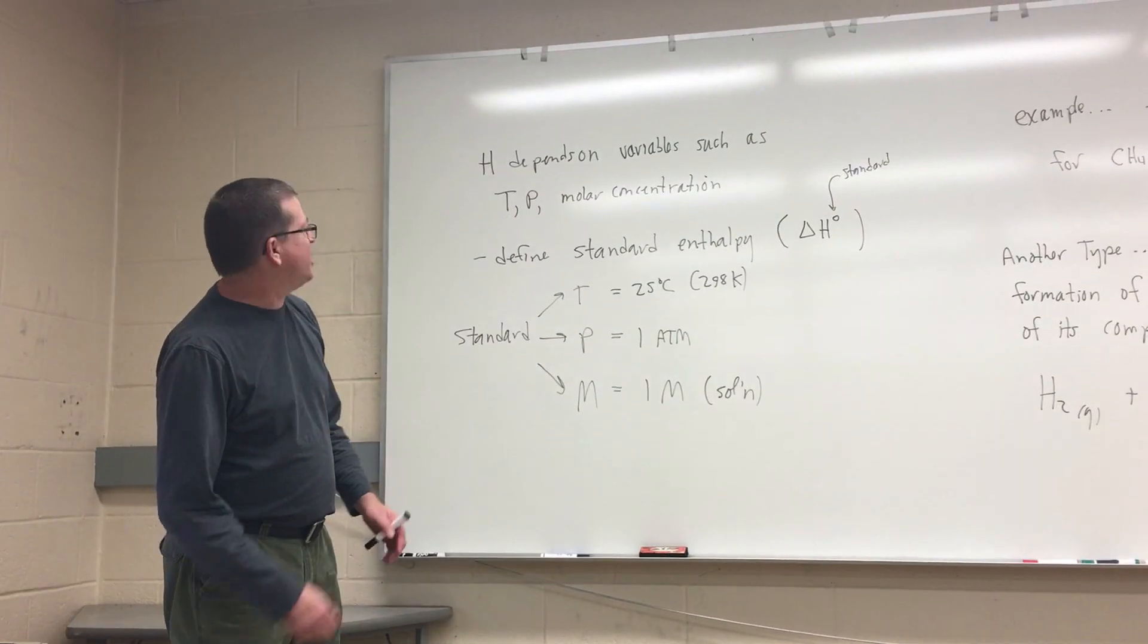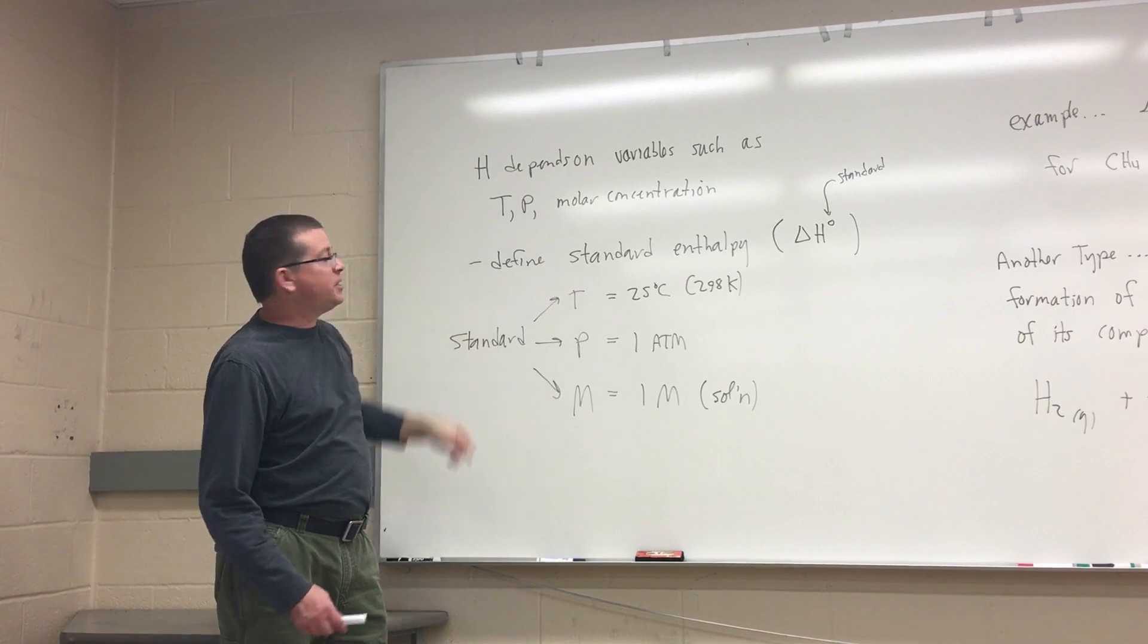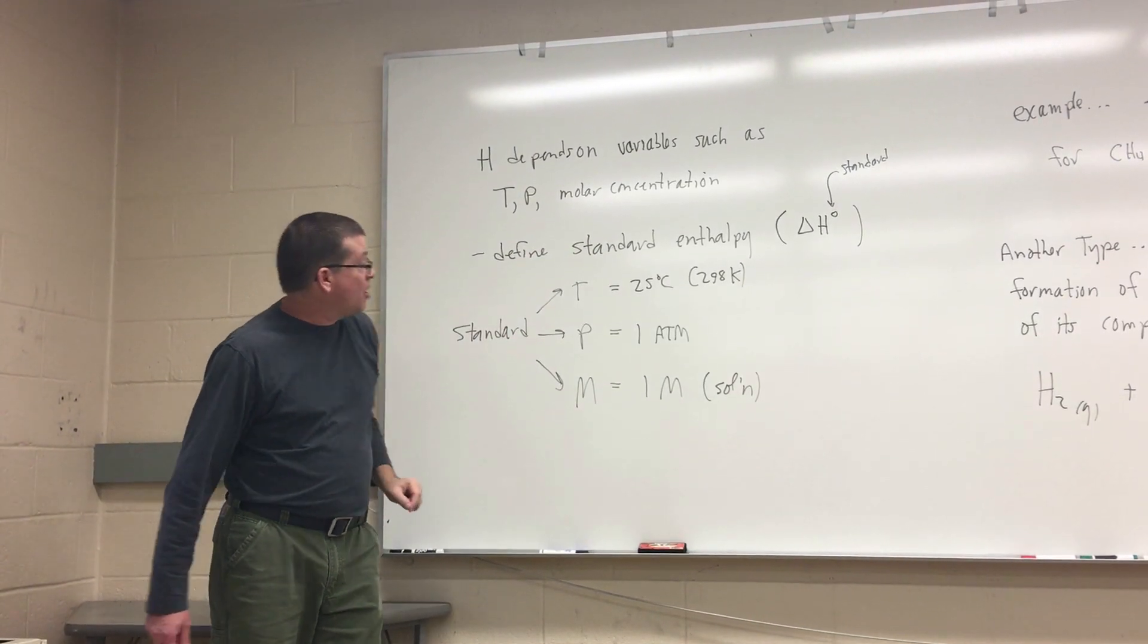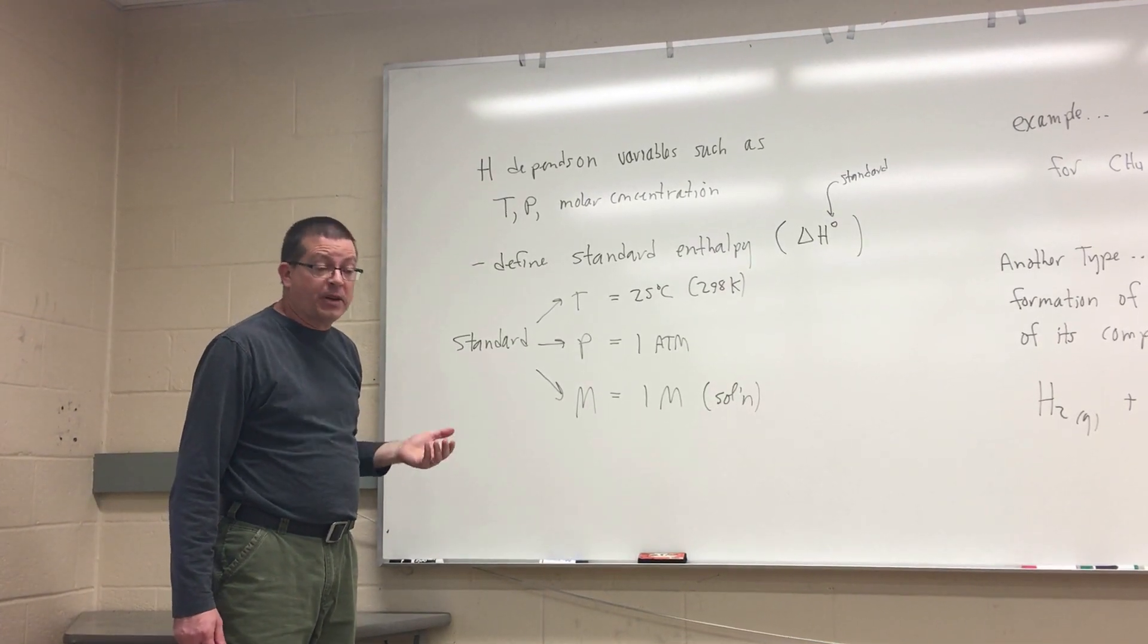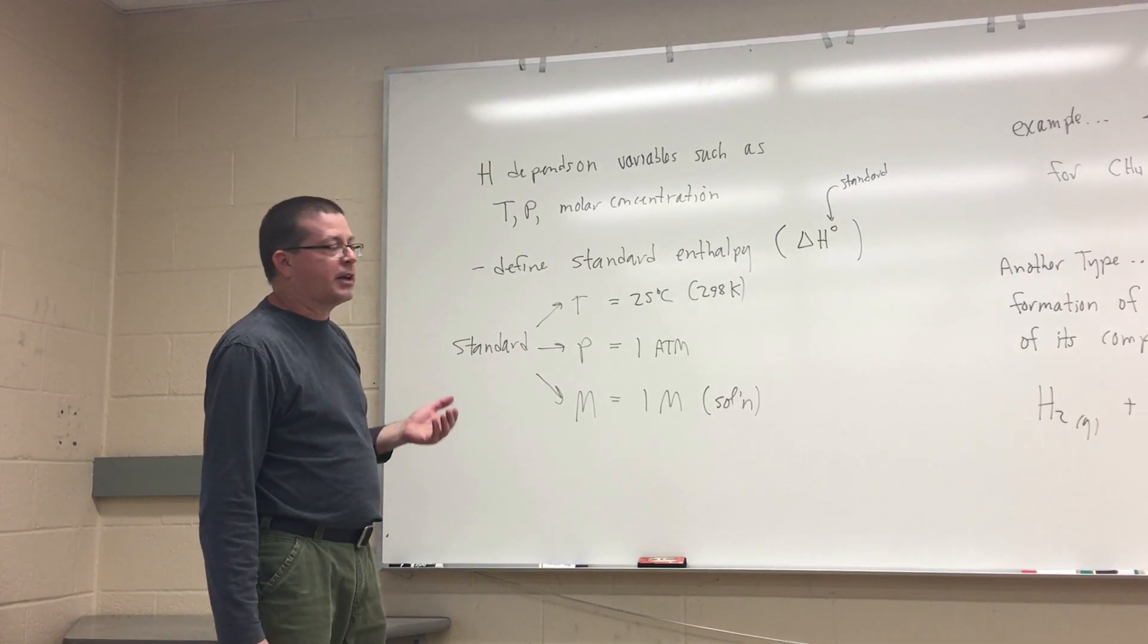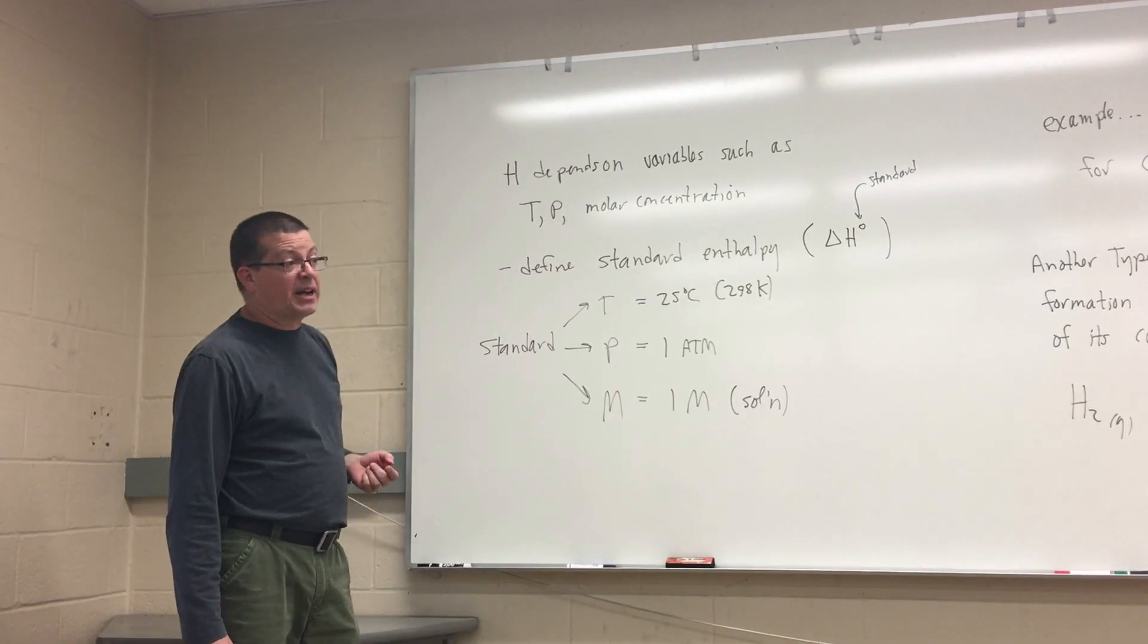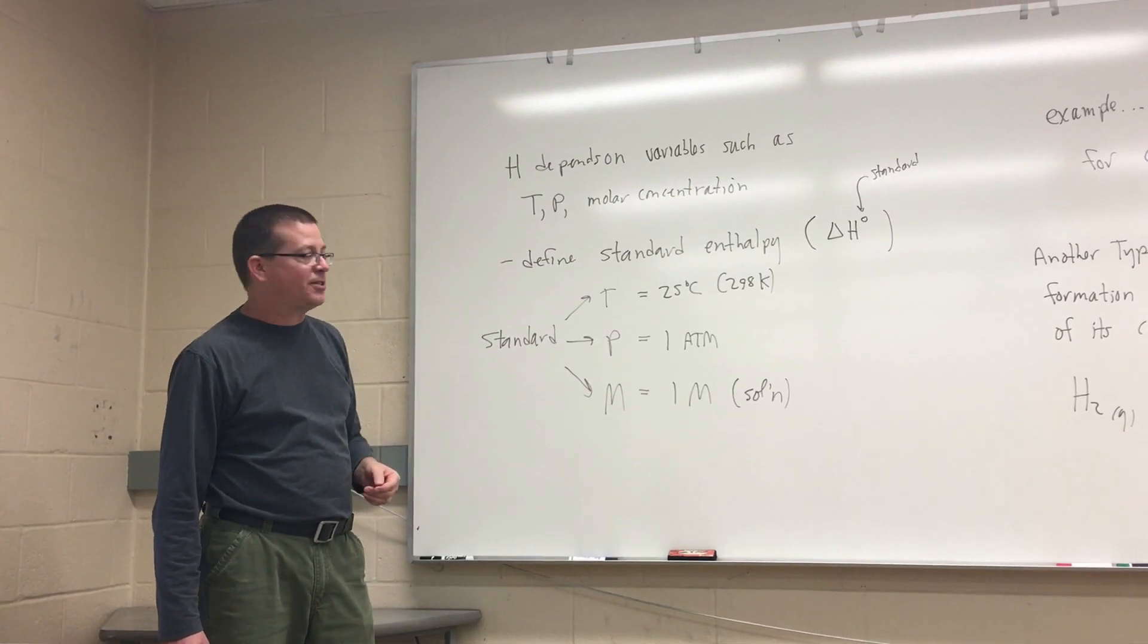One thing I wanted to mention is that enthalpy is going to depend upon several variables that are important to us, and these variables that we care about are temperature, external pressure, and molar concentration. One way we can keep track of this is we can actually define an enthalpy or an enthalpy change occurring under what we call standard conditions. If we do that, we're calculating or determining a standard enthalpy value. When I say standard state conditions, I'm setting conditions of temperature, pressure, and molar concentration if I'm in the condensed phase.